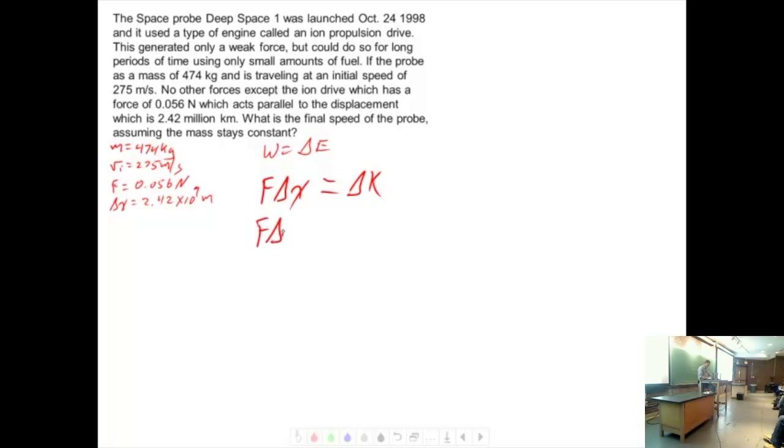F delta X equals one half M V final squared minus one half M V initial squared. Is that accurate? Delta anything is final minus initial. Does mass cancel out for me? No, it doesn't in this case.